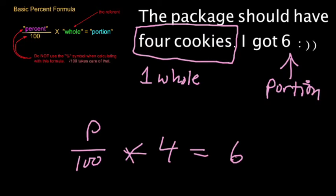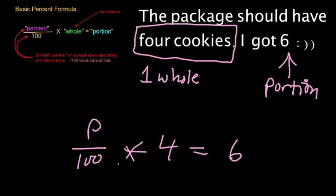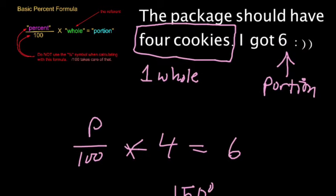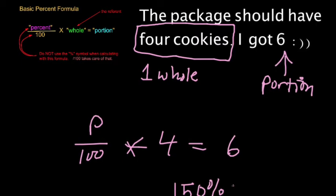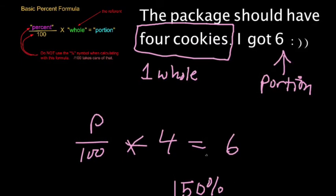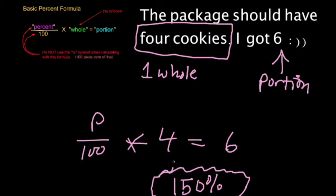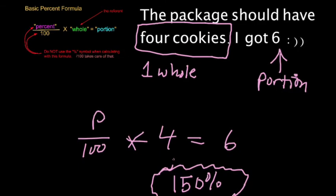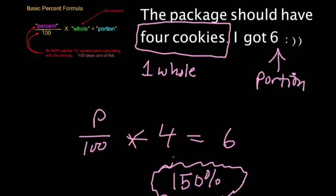Same kind of setup. P over 100 times 4 equals 6. This time, same kind of steps, but I get a very different answer. I think at the end of all this, at the end of all these calculations, I will find out that I have 150% of my cookies. This should, and I asked about this when we talked about Zoom percents, if you understood what it means to have a percent bigger than 100, it means I have more than one whole. I have, in this case, one and a half packages of cookies, basically.